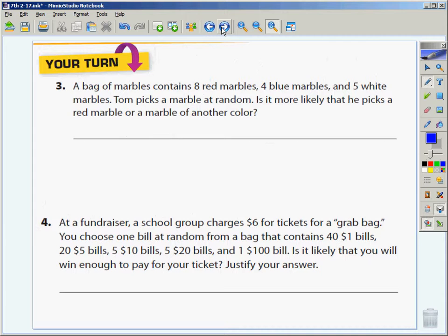Let's look at your turn three and four. A bag of marbles contains eight red marbles, four blue marbles, five white marbles. Tom picks a marble at random. Is it more likely that he picks a red marble or another color? First off, in order to do the probability, I have to know how many total. So let's talk about the probability of anything. There's eight and four, which is twelve, and five more is seventeen.